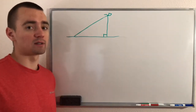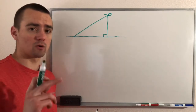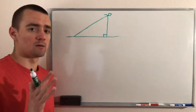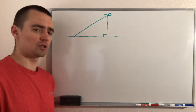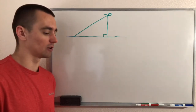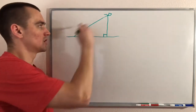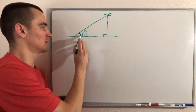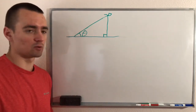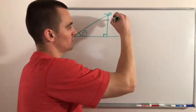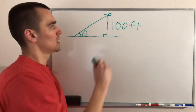Turning the situation into a triangle is a really good place to start because we know a lot about triangles — the Pythagorean theorem, sine, cosine, tangent, SOH-CAH-TOA. There are a lot of ways to relate angles and side lengths of triangles. What the question asks about is the angle between the string and the horizontal, so that angle is represented by theta here.